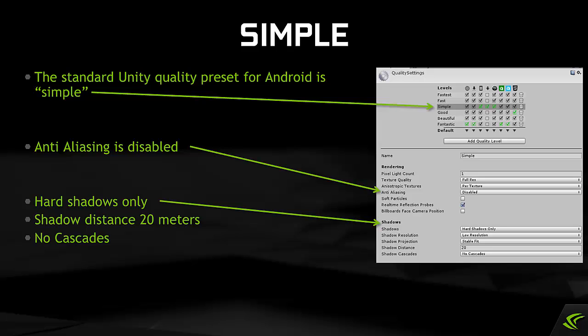With Simple, which is the default for Android, you can see that anti-aliasing is disabled, there are only hard shadows, the shadow draw distance is 20 meters, and cascades are disabled.